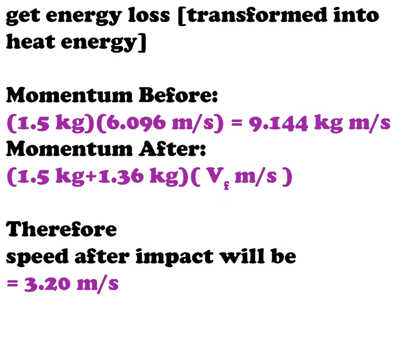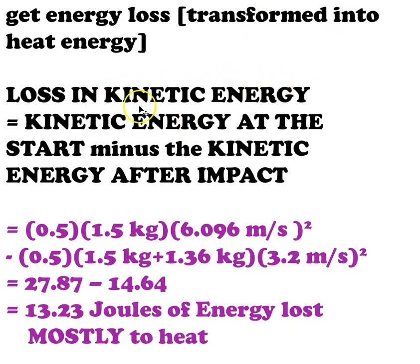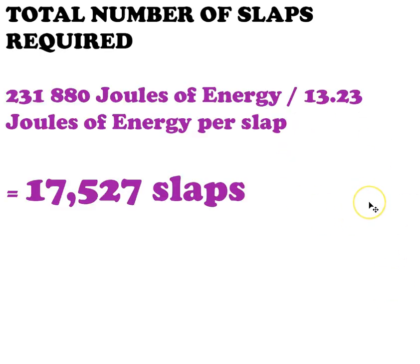Since these two values were so close to each other, it looked like I was on the right track. Why do I need the speed? That's how I get the energy loss. That is going to be a difference in the kinetic energy before and after. I will not have the same amount of kinetic energy afterwards. Some of it got lost to heat. With these calculations, I am going to be getting a certain amount of energy lost to both heat and sound. I am assuming most of it's going to heat. Therefore I am happy to say 13.23 joules of energy lost to heat per slap. How many slaps do I need? I am taking the total amount of energy that I need to cook the chicken and dividing by the energy per slap. That gives me a total of 17,527 slaps. Is this the final answer? Hell no.